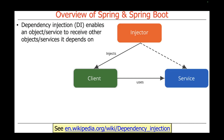Here we have some client which uses a service, and rather than having the client hard-code itself to the service, instead we use dependency injection to take an instance of the service or object and provide it to the client. You'll get a lot of chance to learn how this works with Spring. It's not the only way to do things, but it allows you to make your code more portable and more modular.